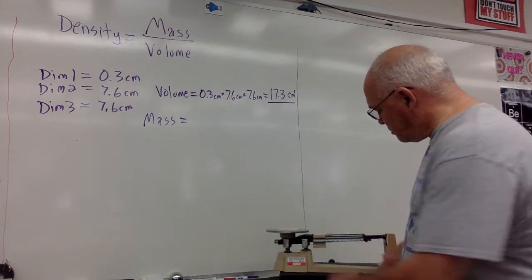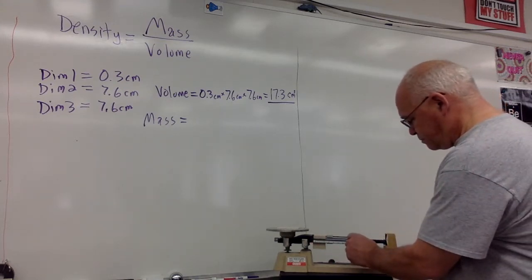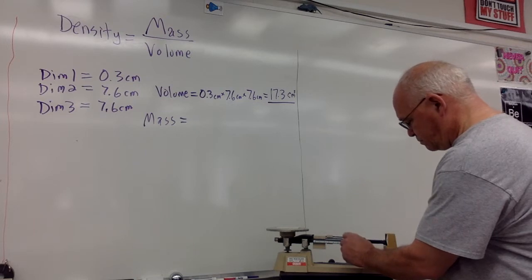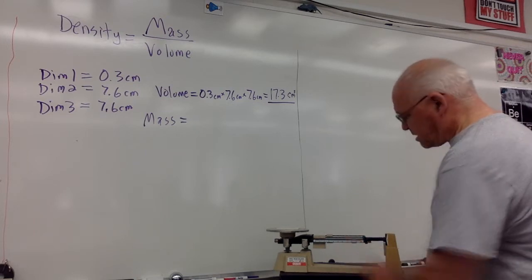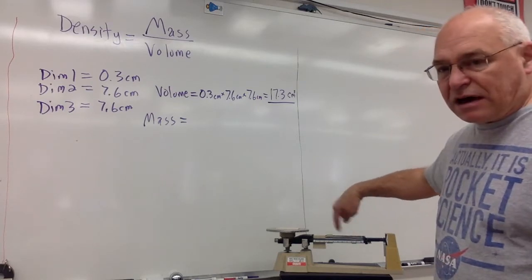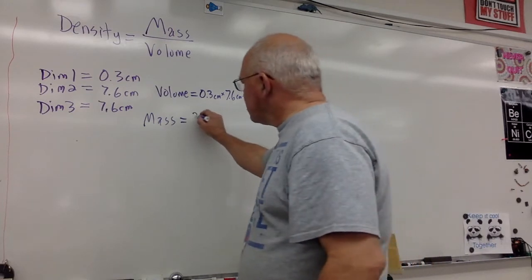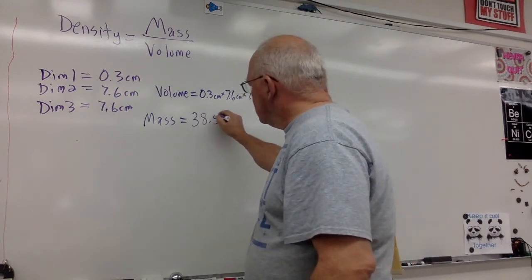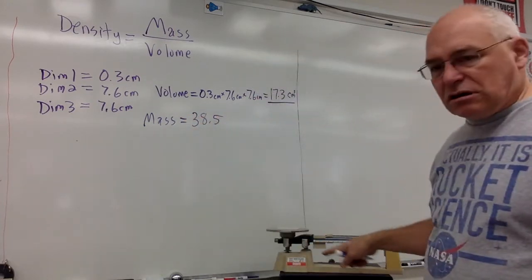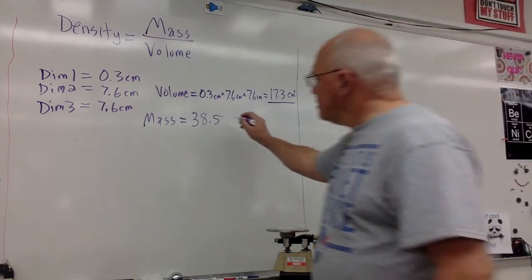There we go. It's 30 and 8.5. So 38.5. Our mass is 38.5. What is the unit? The unit on these triple beam balances is grams. So 38.5 grams.